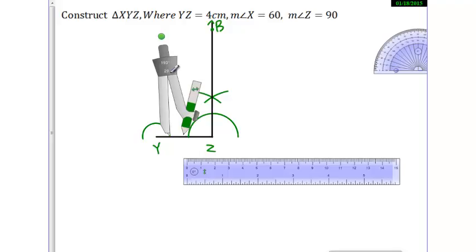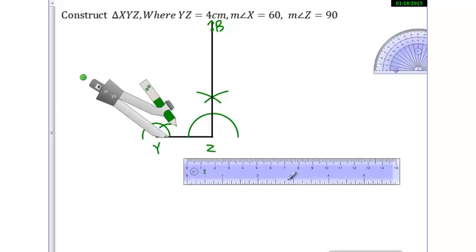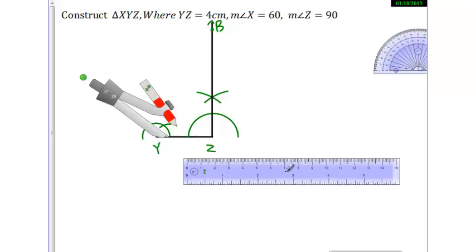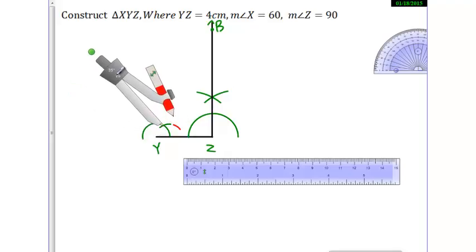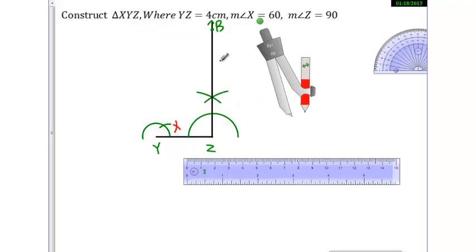60 ka half karna hai. This is my 60, and then let me take another pen from this menu. Then I will draw an arc here, then I will put my rounder here, then I will again draw the arc, then I will draw the straight line.